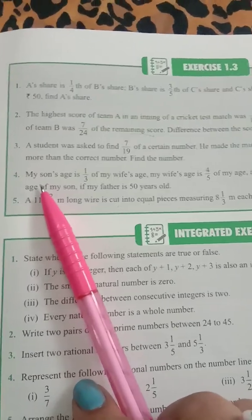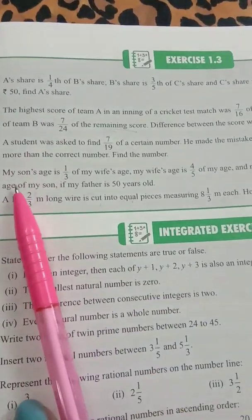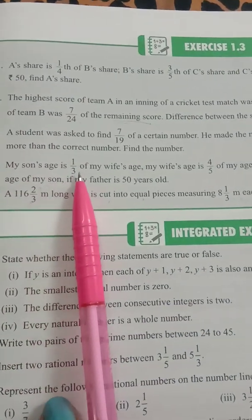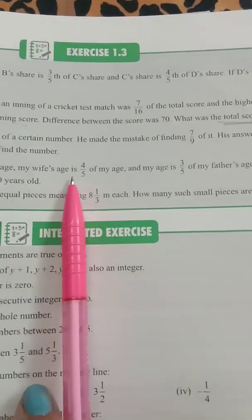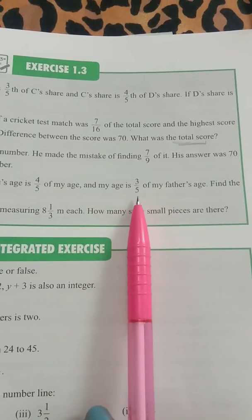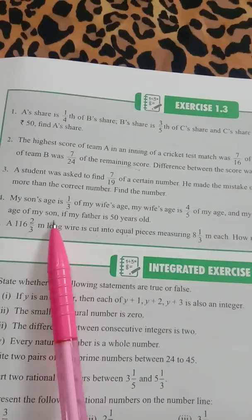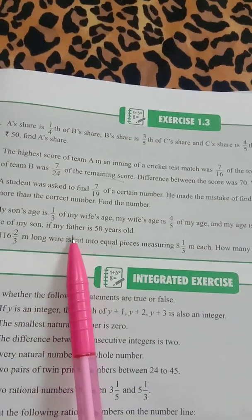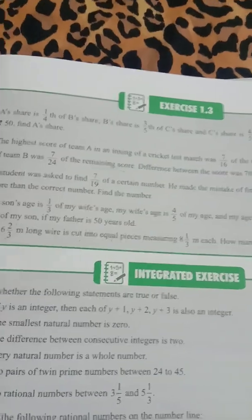Question number 4. This is almost like your question number 1 only. My son's age is 1 by 3 of my age. My wife's age is 4 by 5 of my age. And my age is 3 by 5 of my father's age. Find the age of my son. And my father is 50 years old.